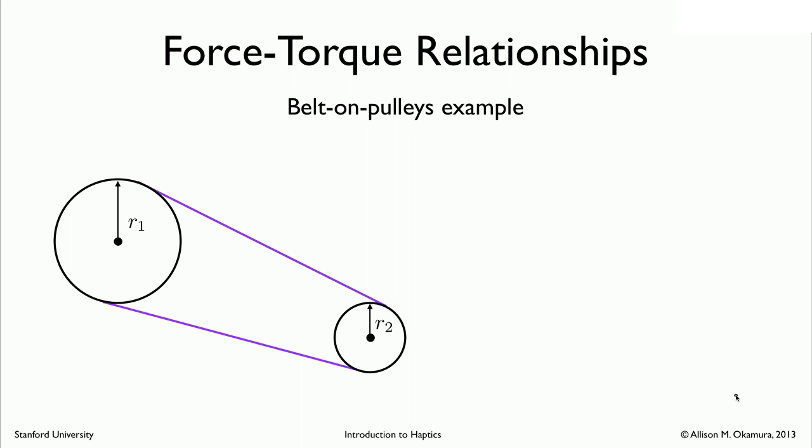Let's look at this example of a force-torque relationship for the same belt on pulleys situation that we used in the previous lecture on kinematics. So we have these same two pulleys now, radius r2 and radius r1 here. The pulleys are pinned at the middle, but they're free to rotate. And let's look at the force-torque relationships in this case.